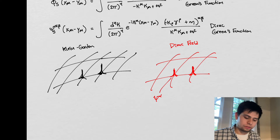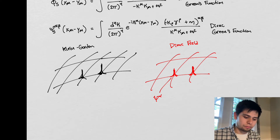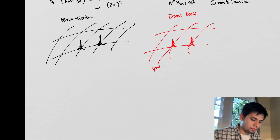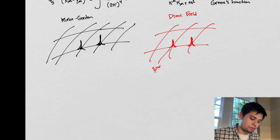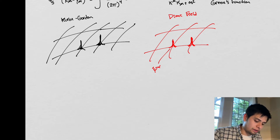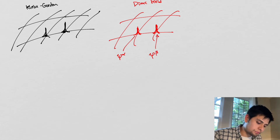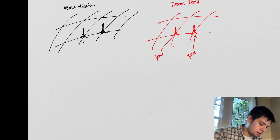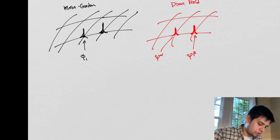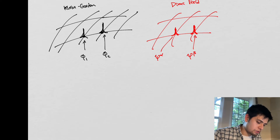We have these excitations in these fields. These excitations interact with each other via these Green's functions. When we're talking about the Dirac field, we're talking about spinors, and these spinors have different components. So here is one spinor, and here is another spinor, say beta. In the Klein-Gordon case, I just have phi_1 and phi_2. These Dirac spinors are four-component objects, so alpha and beta run from 0 to 3.